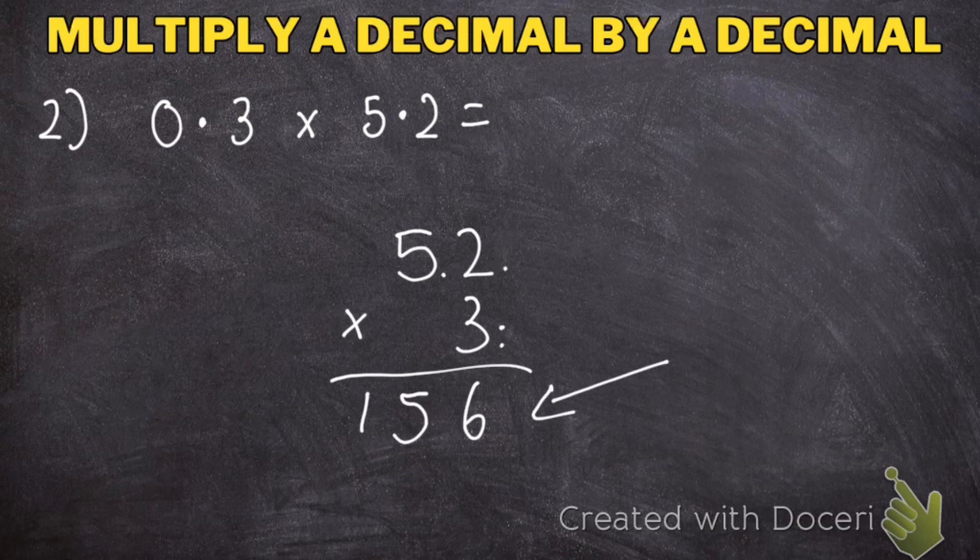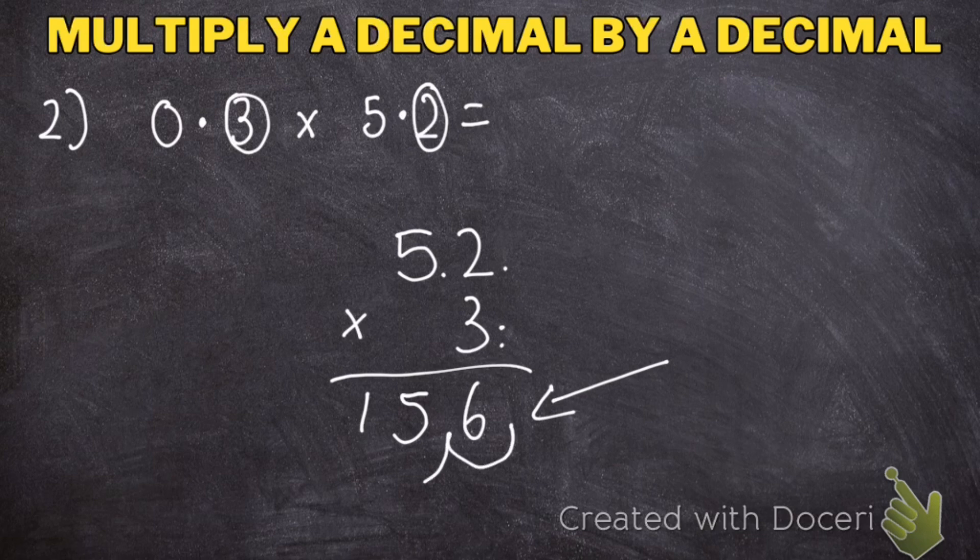This is not my final answer. Let's look at how many decimal places I have. I have 1, I have 2. So I'm going to move the decimal point 1, 2 places to here. My final answer is 1.56.